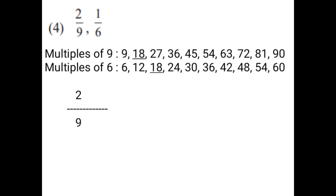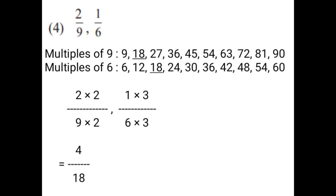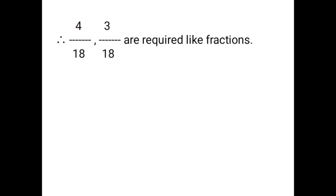After finding the lowest common multiple of both the denominators, you have to make the denominators equal — that is denominator 18. 2 upon 9 multiplied by 2 on numerator and 2 on denominator. 1 upon 6 multiplied by 3 on numerator and 3 on denominator. That is equal to 2 × 2 = 4 upon 9 × 2 = 18. And 1 × 3 = 3 upon 6 × 3 = 18. Therefore, 4 upon 18 and 3 upon 18 are the required like fractions.